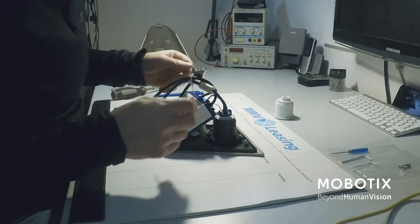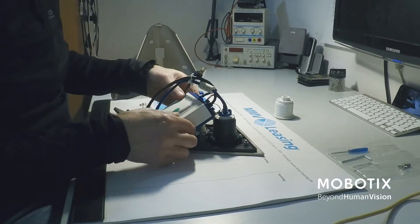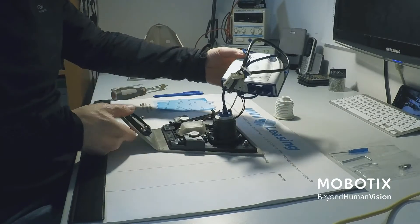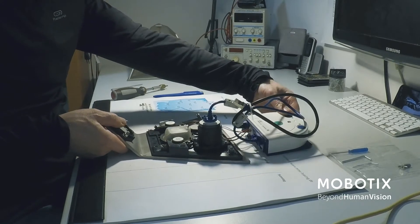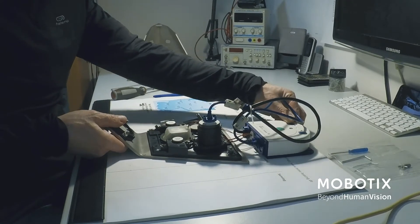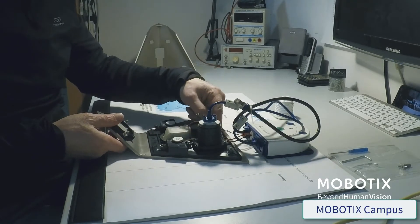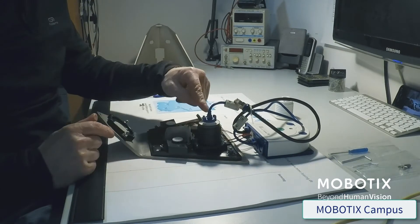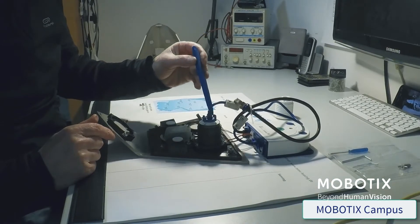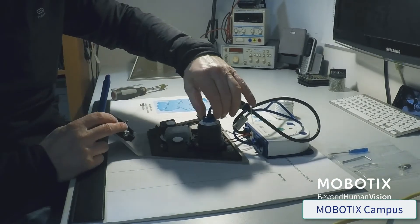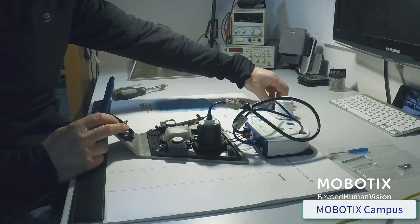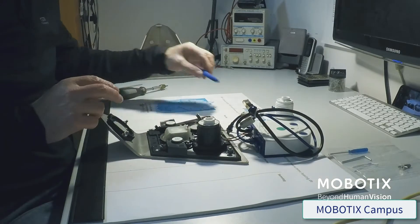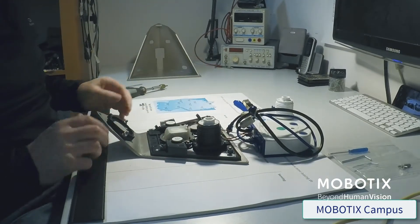If we have removed all the screws we can take the camera core and put it to the back, just fold it to the back because we have still some cables attached. The cable, the image sensor cable, we need to detach here. Therefore we need to open this here and unplug the cable. So then the sensor cable is detached.